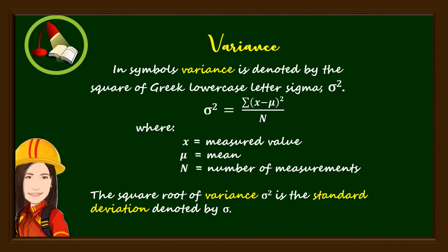In symbols, variance is denoted by the square of Greek lowercase letter sigma. The square root of variance, sigma squared, is the standard deviation, denoted by sigma.